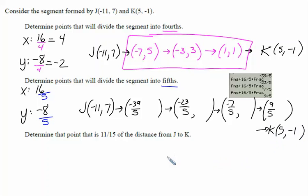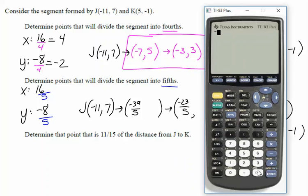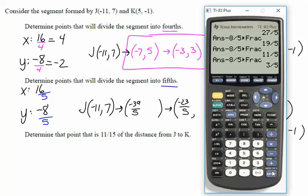Now we're going to do the same process with the y coordinate. We're starting at the y value of 7 and subtracting 8 fifths. Hit math, convert to fraction. Then we take that previous answer and again subtract 8 fifths. Hit math, convert to fraction. Second answer will allow you to keep repeating this process.